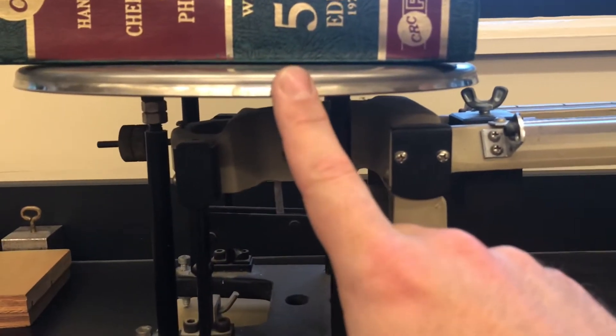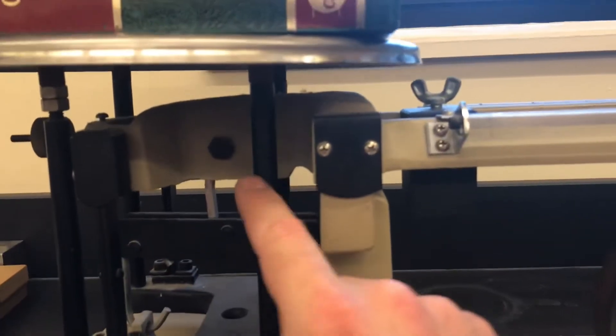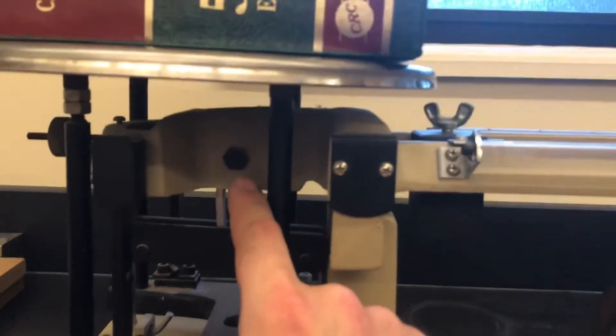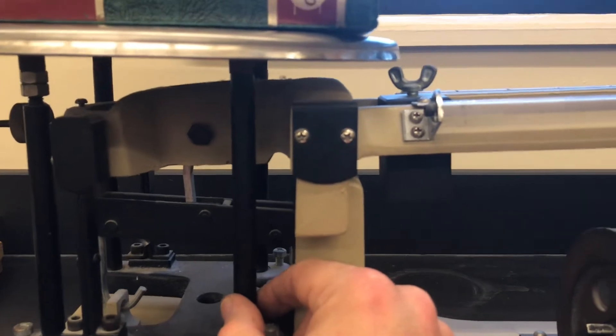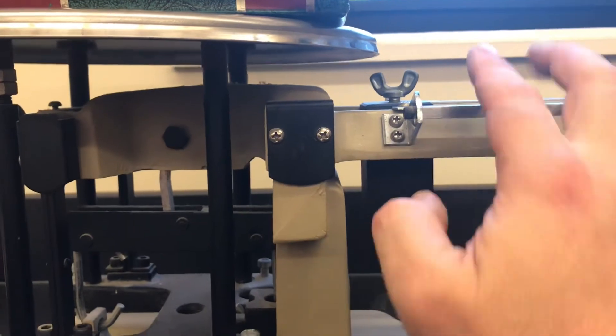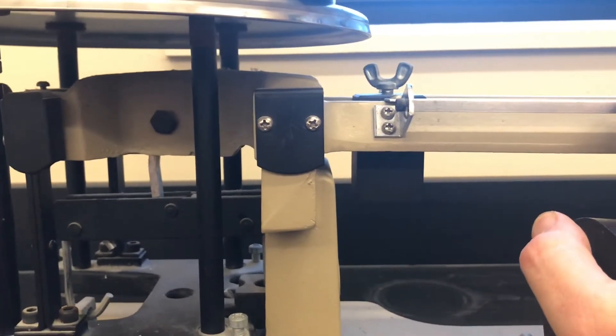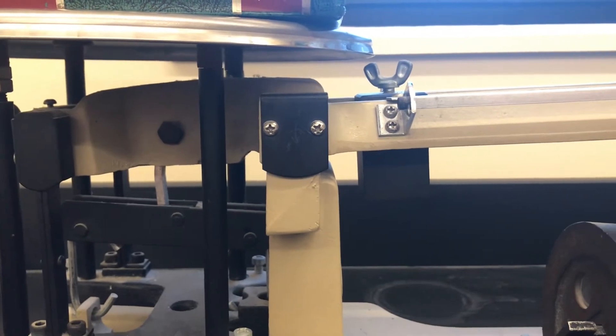The support for the pan is underneath here, and you can see that's basically attached to these struts here. The pivot point is right inside of here. You can see if I press down on the right, the left goes up, and vice versa. If I move the right up, the left goes down. It's all rotating right around this point in here.